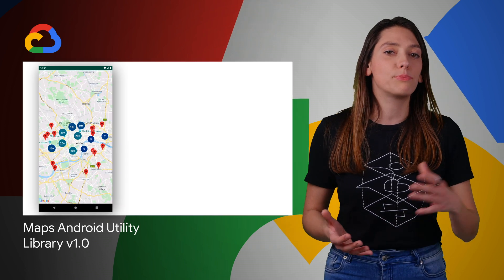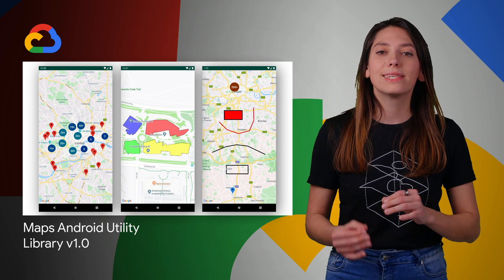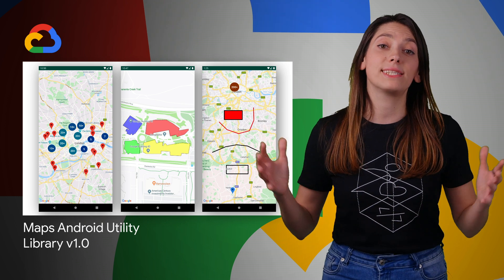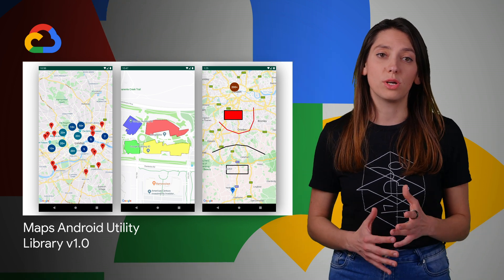The first major release, version 1.0, of our open source Android Maps utility library is now available. While the Maps SDK for Android provides several optimization options, like displaying markers, ground overlays, or drawing shapes on the map, the utility library allows you to extend these capabilities even further. Find out what's new in version 1.0, and more from the post.